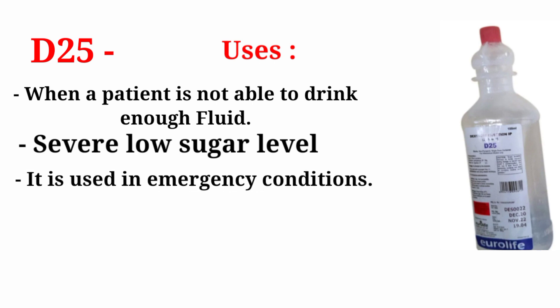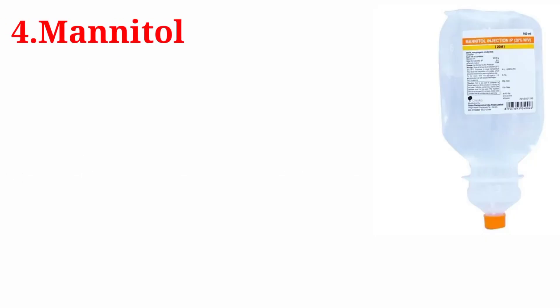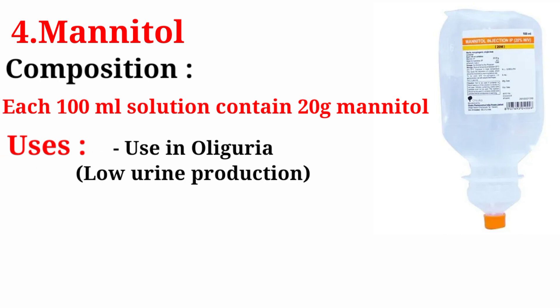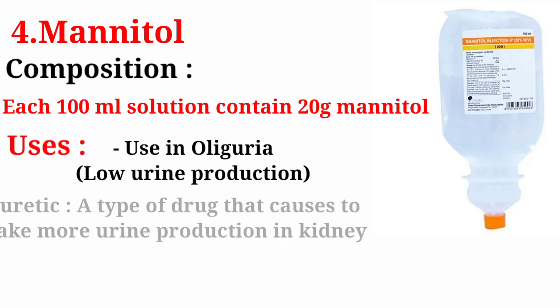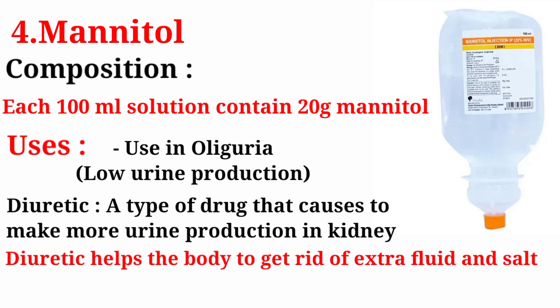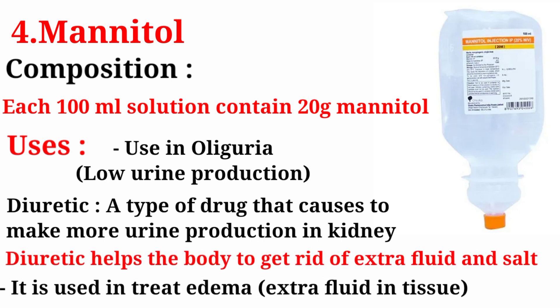Now we talk about Mannitol. Composition: 100 ml solution containing 20 gram mannitol. Uses: used in oliguria (low urine production) — it is a diuretic medicine. A diuretic is a type of drug that causes the kidneys to make more urine, helping the body get rid of extra fluid and salt. It is also used to treat edema, which means extra fluid in tissue.